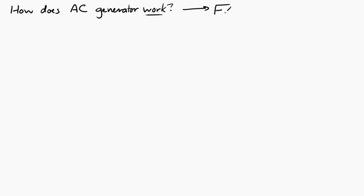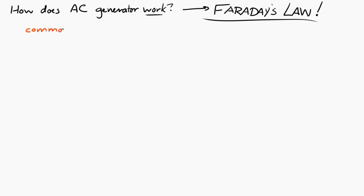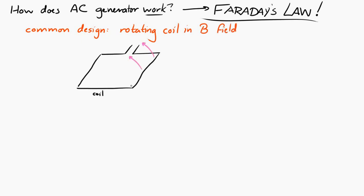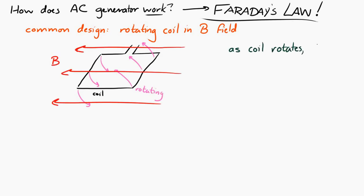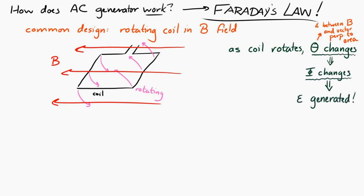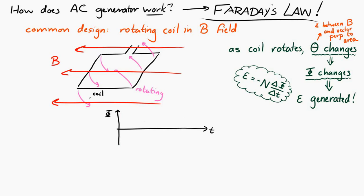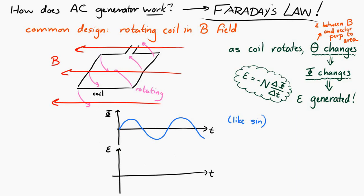So how does an AC generator create this oscillating potential difference? It uses Faraday's law. A common design is to use a rotating coil within a magnetic field. As the coil rotates, theta changes — theta is the angle between the magnetic field and a vector perpendicular to the loop area. If theta changes, then the flux changes, and if the flux changes, then according to Faraday's law an EMF is generated. So if the flux is oscillating, then the EMF will oscillate as well.